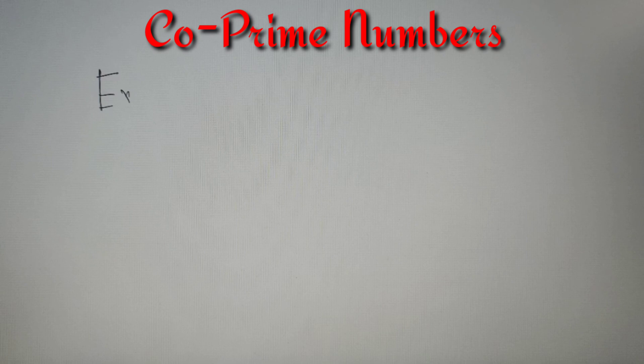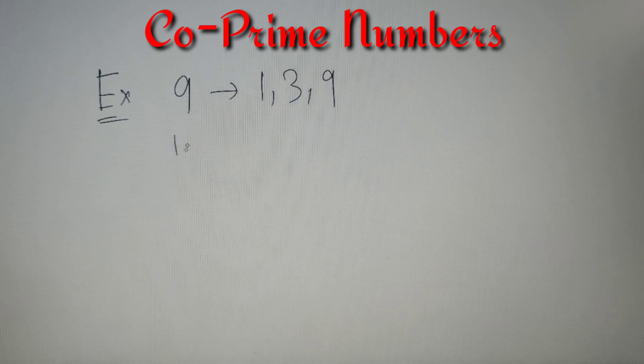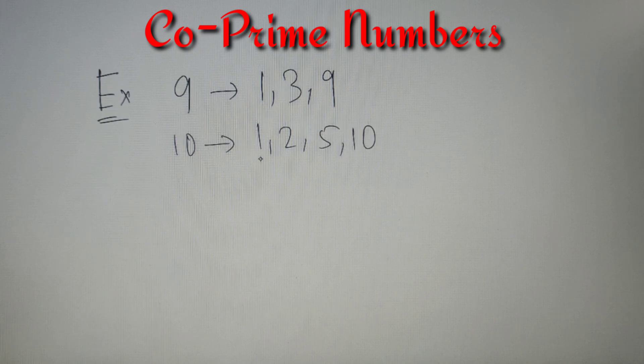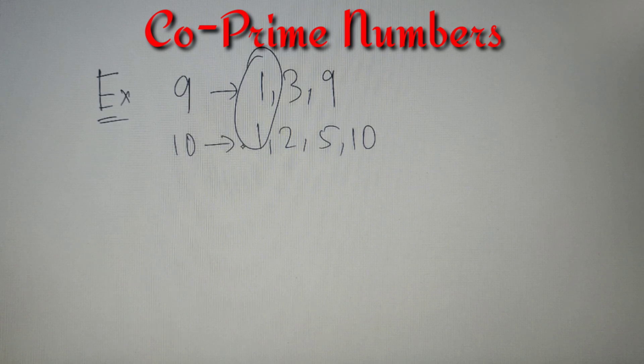Beginning with our first topic: what are co-prime numbers? Two numbers are said to be co-prime if they do not have any common factor between them other than the number 1. For example, the factors of 9 are 1, 3, and 9, and the factors of 10 are 1, 2, 5, and 10. The only common factor between these two numbers is 1, so I can say that these two numbers are co-prime to each other.